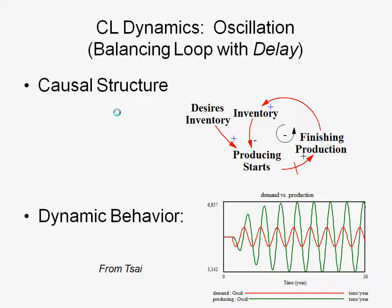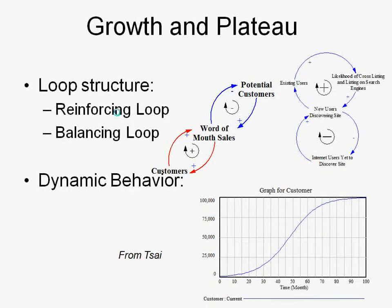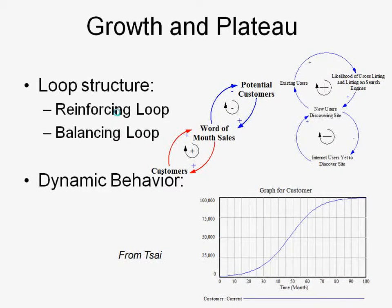Then we can get growth and plateau — competing positive and negative loops, where the negative one limits the growth of the positive. Initial exponential-looking increase, but eventually you limit the susceptibles. For example, with herpes — people stay infected for life — more people get infected but there are fewer and fewer susceptible people to infect, so the number goes up to some equilibrium.